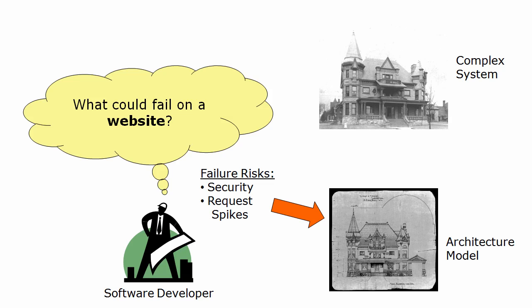Let's say that you're building online software, like a website. You might worry about security and request spikes, and you'd build a model to help you reason about those risks. If you're building embedded software, like a thermostat, you might instead be worried about memory leaks and portability to new hardware, and you'd build a model for those risks. It would be great to look at every risk, but you'll only have so much time.